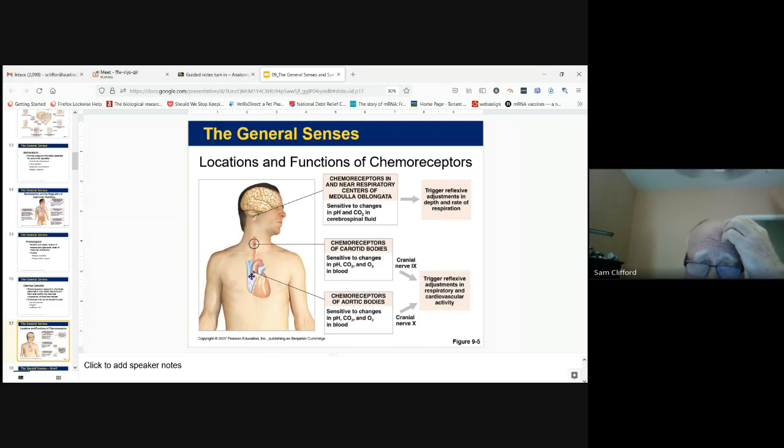And the aortic bodies around the aorta are going to sense pH, CO2, and O2. So between kidney function and lung function, one of the constant duties of those systems is to maintain pH and sense how much CO2 we have and how much oxygen we have.